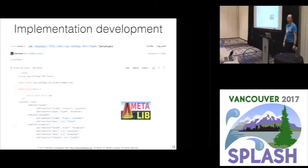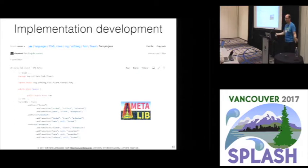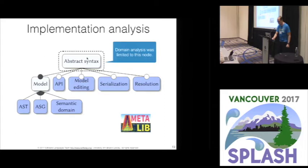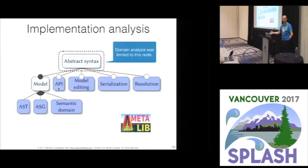All the implementations are on GitHub. We didn't participate in the artifact evaluation process because our artifact is so scattered and complex that it's better just to keep it on GitHub. We got all these implementations, looked at them, analyzed them, and figured out how to refine the feature model. In the basic feature model we only had abstract syntax, but the more refined features down here are ones we encountered by looking at the different implementations.